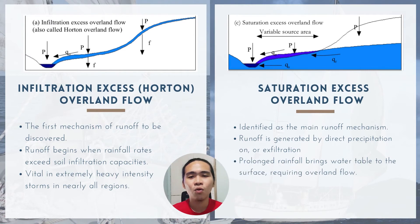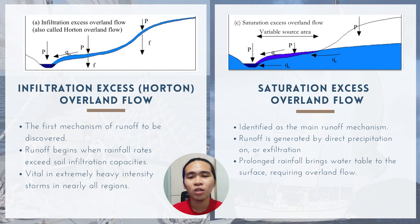On the flip side, saturation excess overland flow has been identified as the main runoff mechanism behind VSA hydrology. The theory assumes that runoff is generated by direct precipitation on or exfiltration from saturated areas in the landscape, and that once soil in these areas becomes saturated to the surface, all additional rain that falls, regardless of its intensity, becomes overland flow. In simplest terms, saturation excess overland flow is what you get when you have a prolonged rainfall that brings the water table up to the land surface, and when it is saturated all the way up, the only place for the water to go is over the land downslope and eventually to the stream.